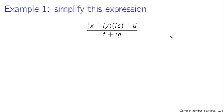First example: simplify this expression. You have two complex numbers multiplied in the numerator and then a division. The first thing to simplify is this multiplication. You have x plus iy times ic.